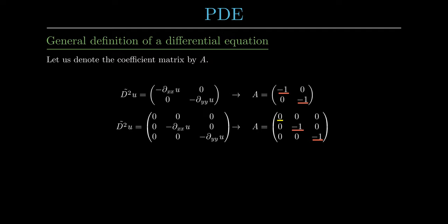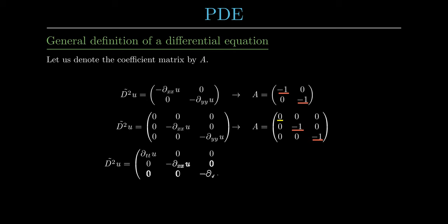The coefficient matrix of the heat equation has an additional zero on its diagonal. This means that the coefficient matrix has one zero eigenvalue and the other eigenvalues have the same sign. This type of PDE is called parabolic. Finally, the coefficient matrix of the wave equation has a coefficient of 1 for the second time derivative entry, meaning one eigenvalue has a different sign from the others. This type of PDE is called hyperbolic.